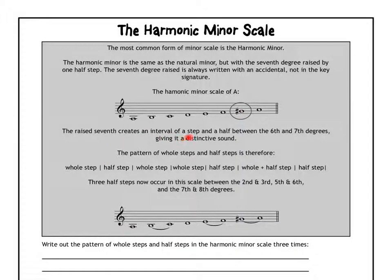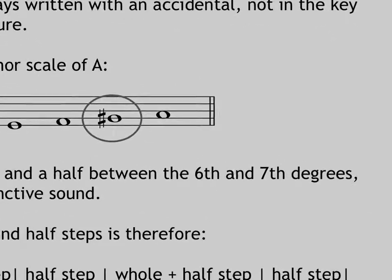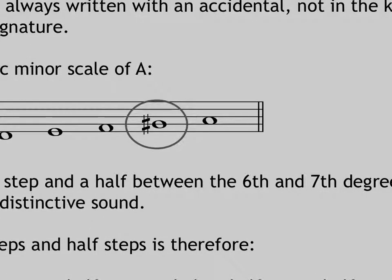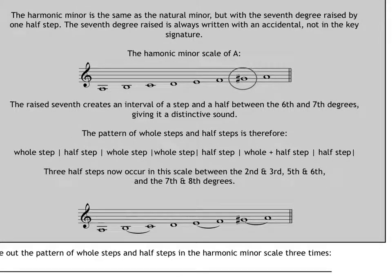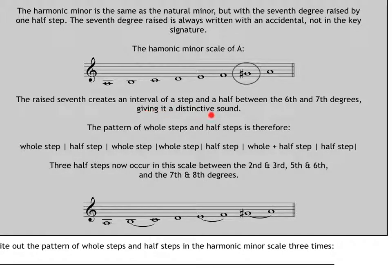The raised seventh note creates an interval of a step and a half between the sixth and seventh degrees. Have a look right here. I'm just going to zoom in real quick, so we can have a very, very definite look at what's going on here. We have the notes E to F. That's fine, a half step. But from F to G sharp. F to G sharp. That is a step and a half. Or three half steps. Or one and a half steps. However you want to think of it. It's more than just your regular whole step. Okay? So, this is a new kind of interval. And it gives us a distinctive sound. Certainly it does. A distinctive sound.